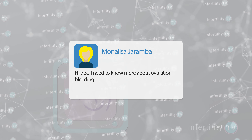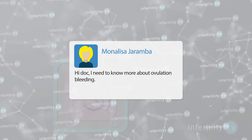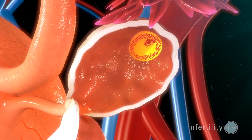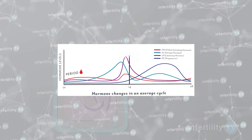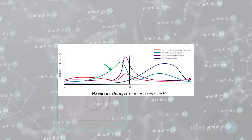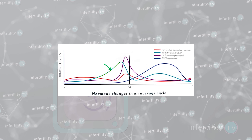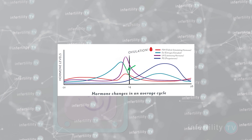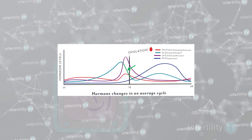Our first question comes from Mona Lisa Jaramba, who would like to know more about ovulation bleeding. It's important to understand that when an egg is maturing in a woman's ovaries, hormone levels are changing. Prior to ovulation, estrogen levels rise, and the estrogen makes the uterine lining thicker. Right before ovulation, there is a small drop in estrogen levels before it recovers. This drop in estrogen can sometimes affect the uterine lining and cause a small amount of bleeding or spotting.